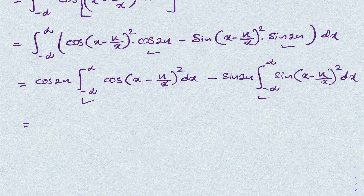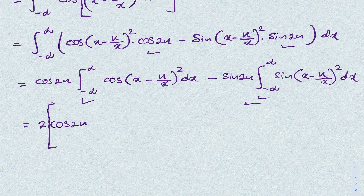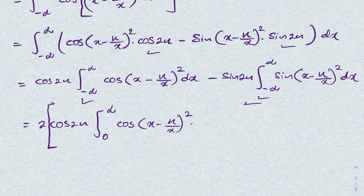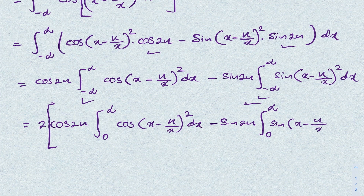Using the properties of even and odd functions over symmetric limits, each integral from minus infinity to infinity equals two times the integral from zero to infinity. So we get 2cosine(2n) times the integral from zero to infinity of cosine[(x − n/x)²] dx, minus 2sine(2n) times the integral from zero to infinity of sine[(x − n/x)²] dx.